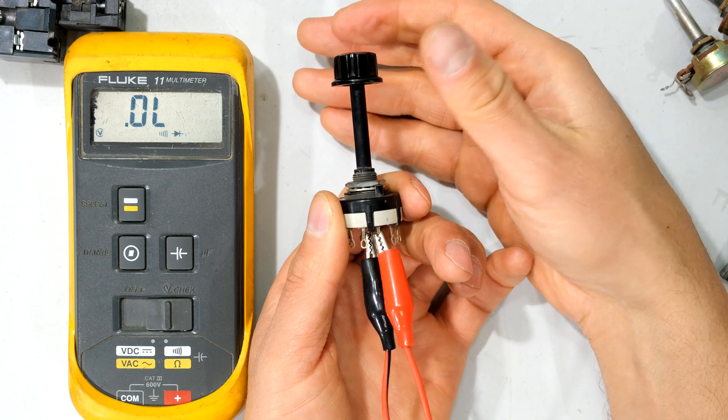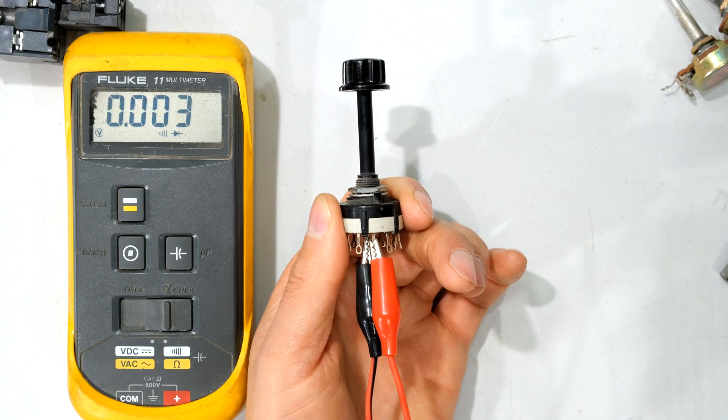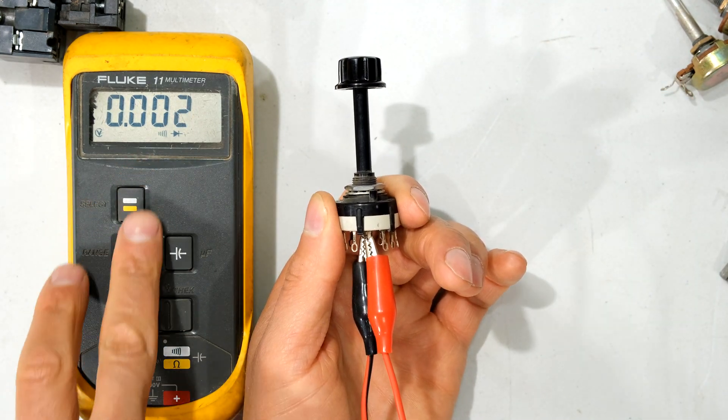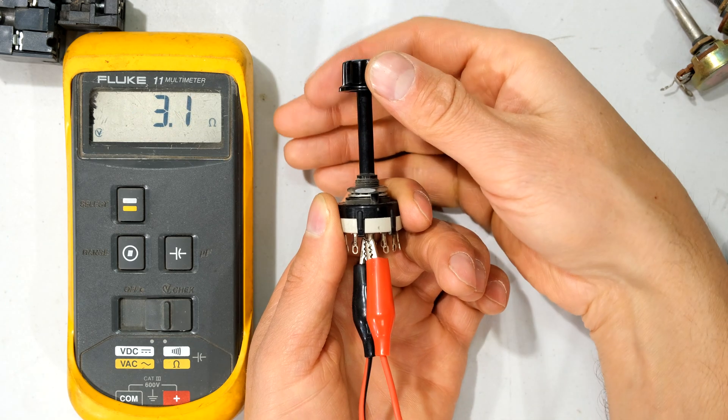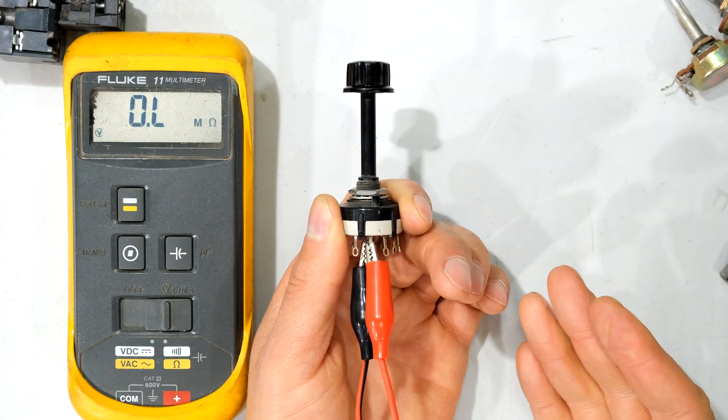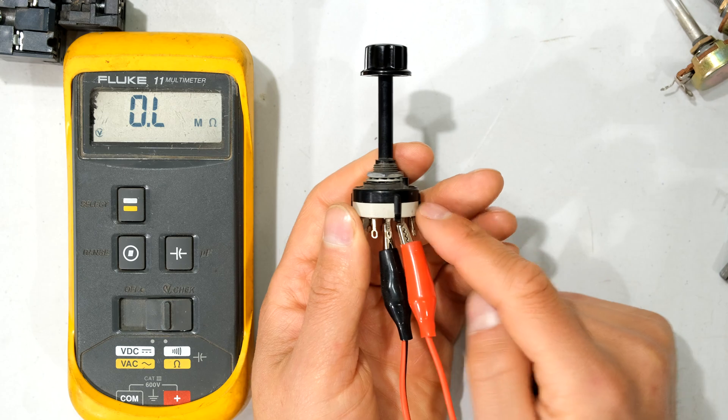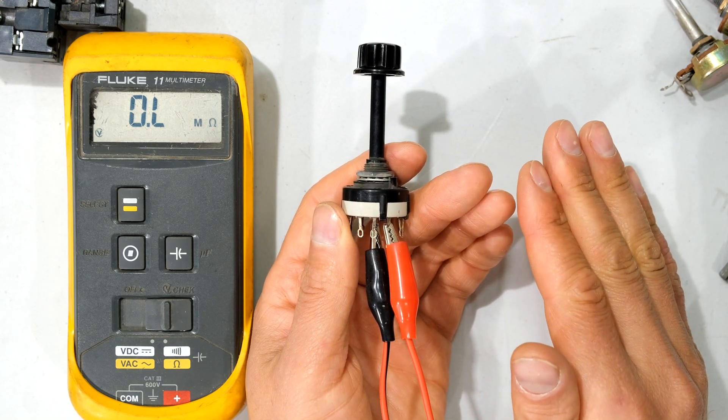If I do the same with the rotary switch, notice what happens to the meter. You can see that it is now a short circuit and the resistance is very low. When I rotate the switch, it goes open circuit. So this is on or off. It does not vary the resistance.